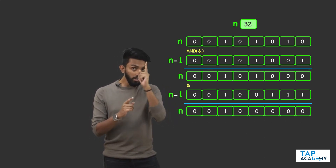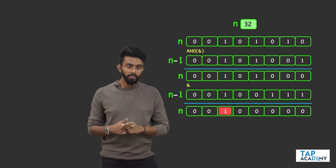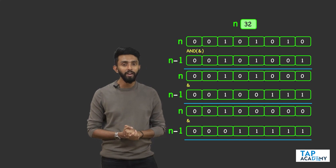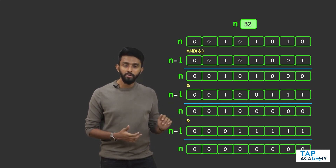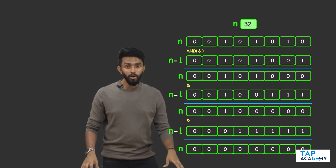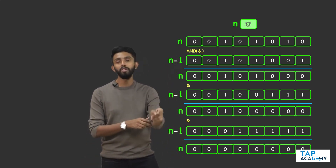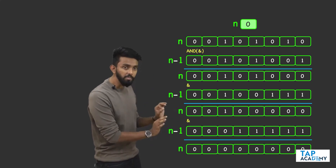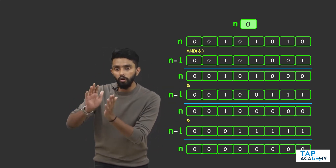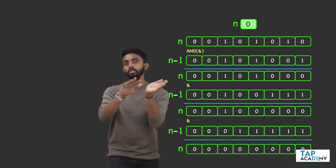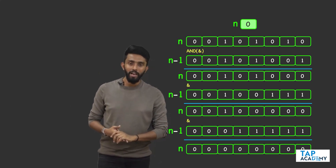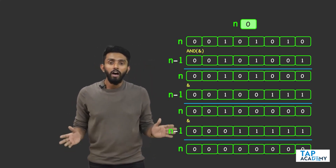There is one more one remaining. I need to count that also. n AND n-1 — if I do that, then this is the value of n I get. And if you notice, it's all zeros. If it is all zeros, then n has become zero. The moment n becomes zero, I stop repeating this operation of doing n AND n-1 and updating the value of n.